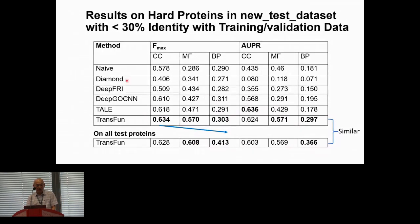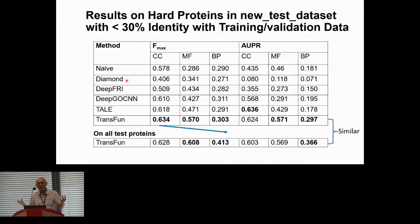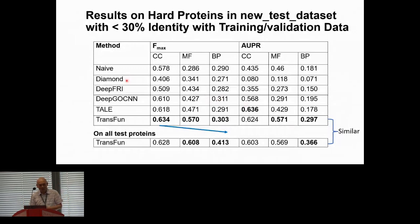To conclude: evolutionary features generated by protein language models are very important for protein function prediction. Protein structures can help function prediction, and 3D equivariant deep learning models — graph neural networks and transformers — are very useful for dealing with 3D objects like protein structures. Deep learning performs better than homology-based methods, and combining homology and deep learning gives even better results. We thank PhD student Frim Pang who did this work, collaborators, and funding agencies.